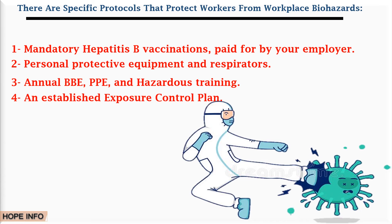The best way to prevent illness is to eliminate your exposure to biological agents. Under normal circumstances, this can be as simple as washing your hands, staying up to date on your vaccinations, and regularly sterilizing surfaces in your home and at work. However, in extreme circumstances — such as when a co-worker is involved in a traumatic accident — additional steps are required.